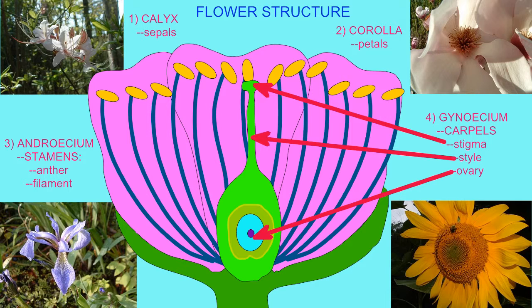The ovary consists of diploid sporophyte tissue around the ovule. This diploid sporophyte tissue will typically form the fruit.